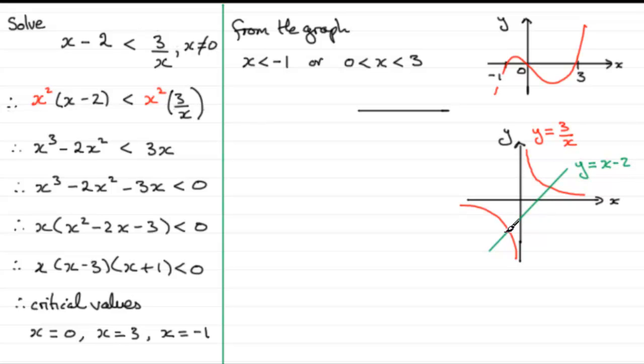Now, we're looking for where the graph of y equals x minus 2, the green graph, is below, less than, below the red graph of y equals 3 over x. And for that to be the case, we're interested at these points where the green graph intersects the red graph.